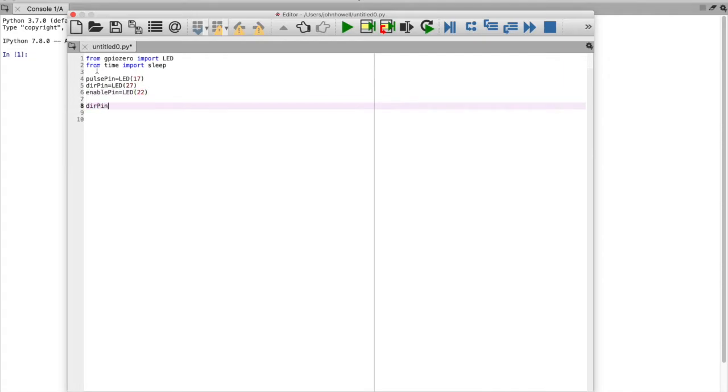To start, I set the direction pin high, but this is not necessary. Then I set the number of pulse steps to 3000. My dip switches are set for 3200 pulses per revolution. So, this corresponds to a little less than one revolution of the motor.